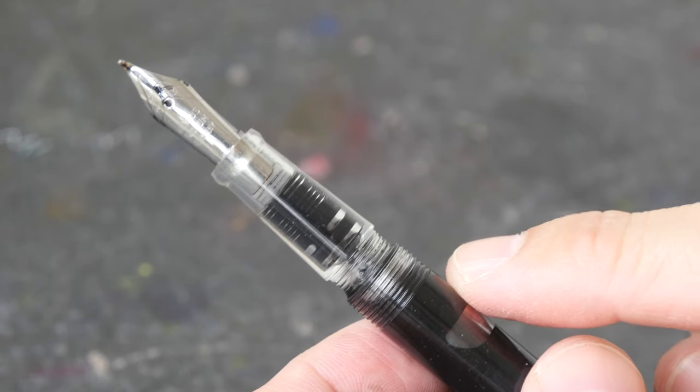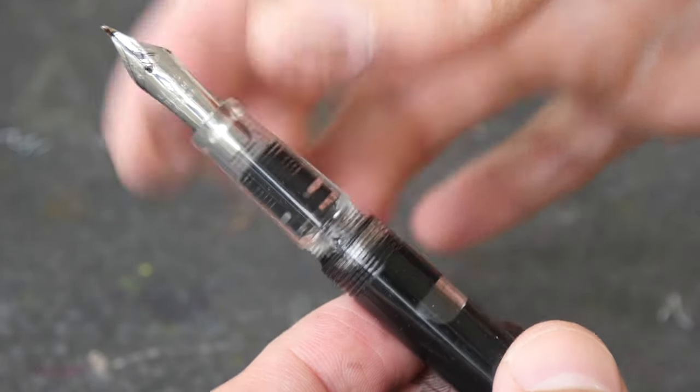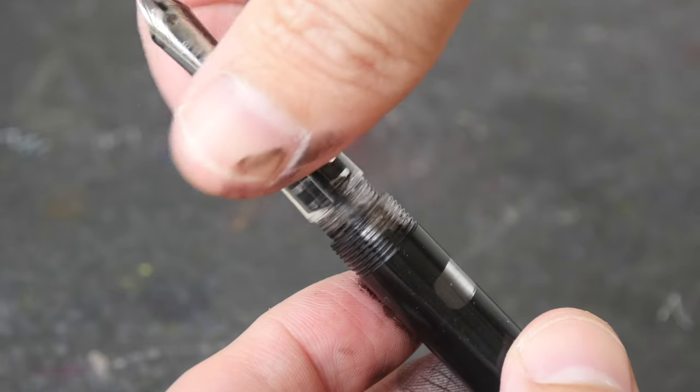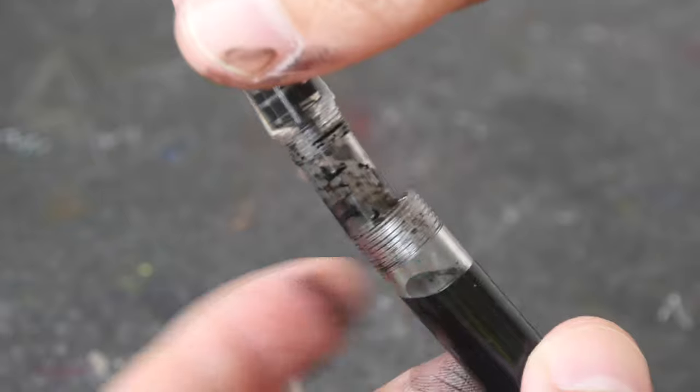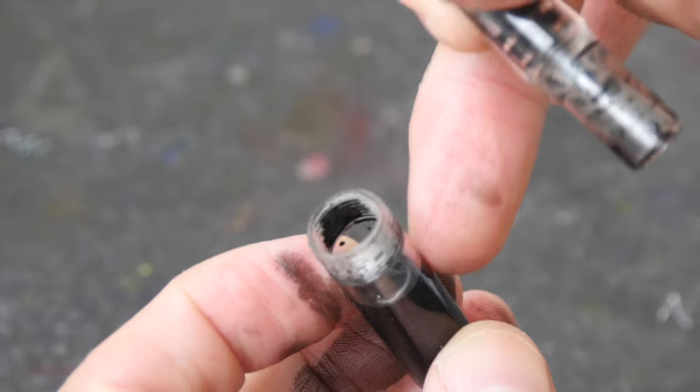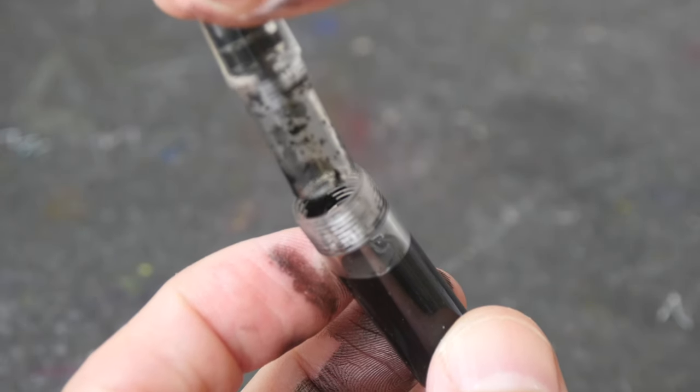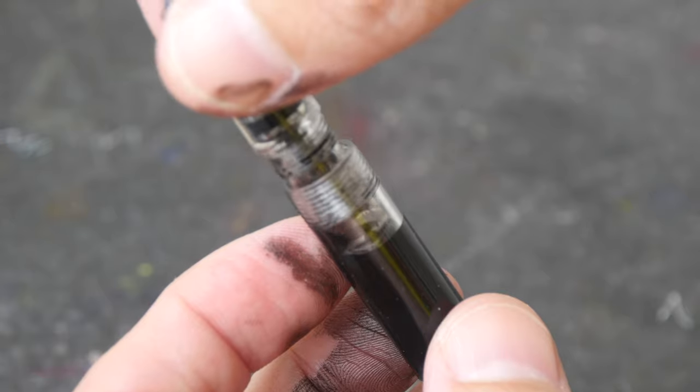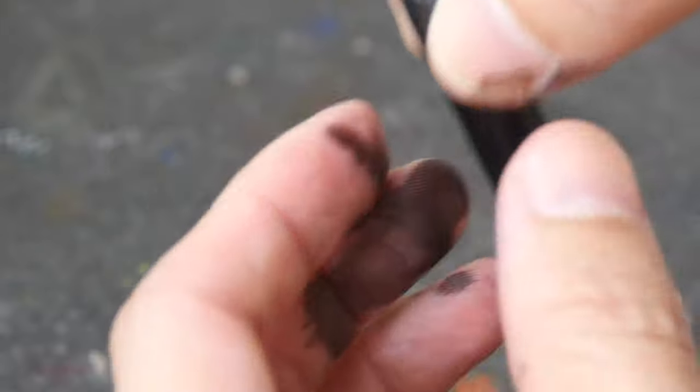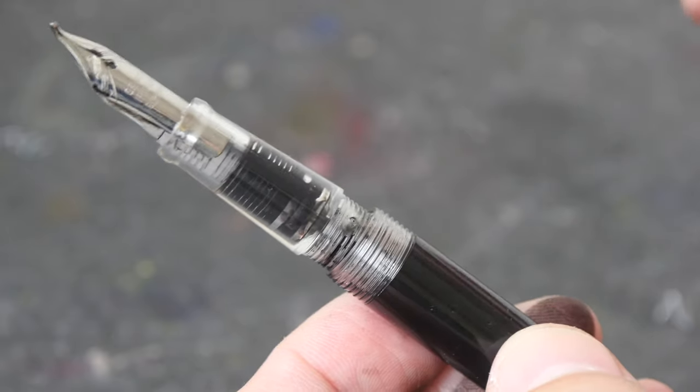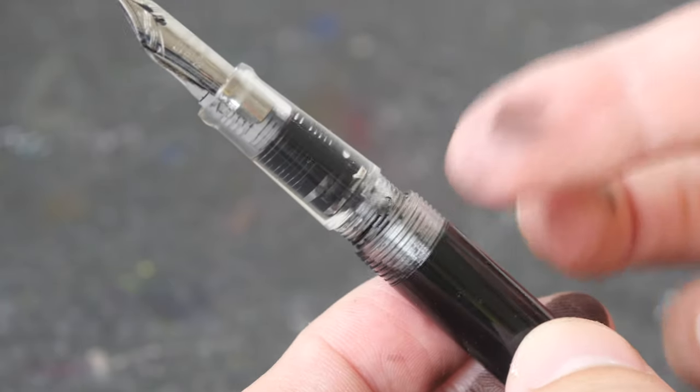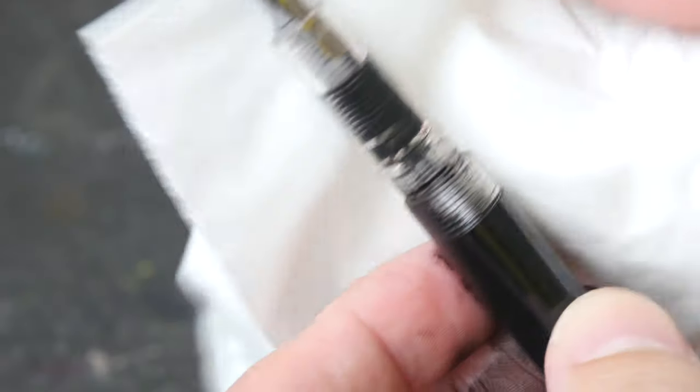One significant downside to this pen is if you want to remove the grip section when there is still ink in it, like what I'm doing right now, the ink that is in the grip section here is going to flow back into the body. And if for some reason you want to put this back, it's going to push the ink out, which is why my hands are so dirty right now. So if you want to open this without the ink spilling out, maybe use up the ink first or have tissue around because the ink will spill out.